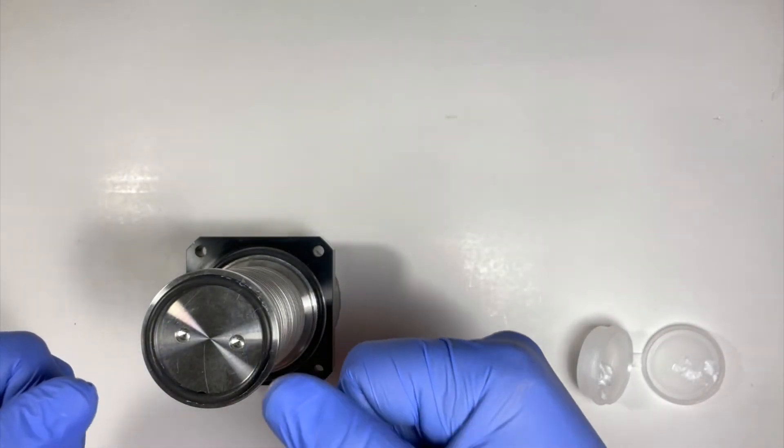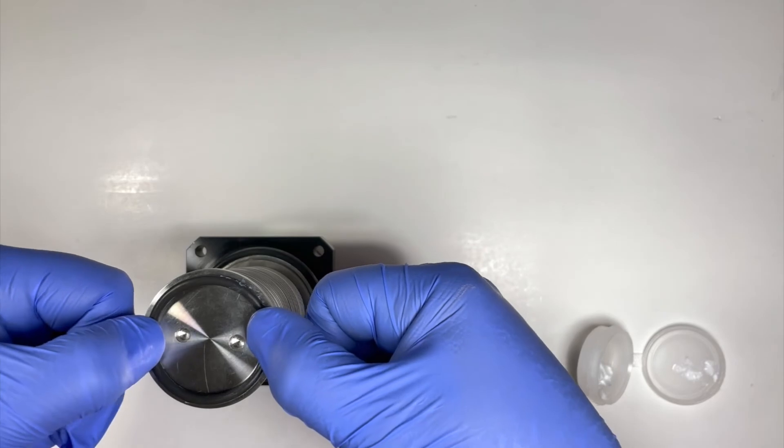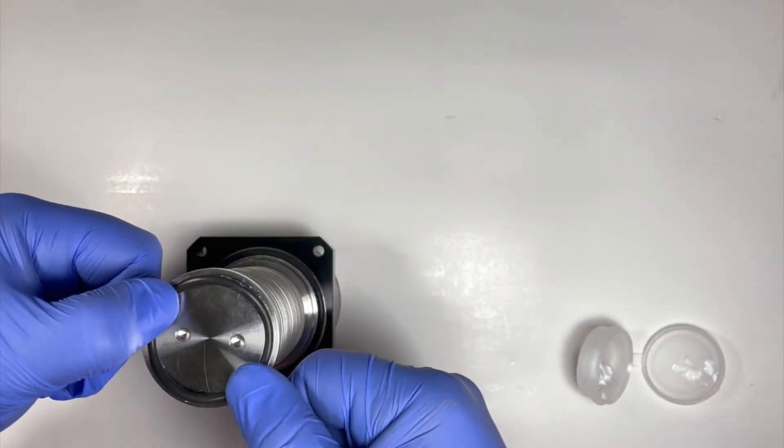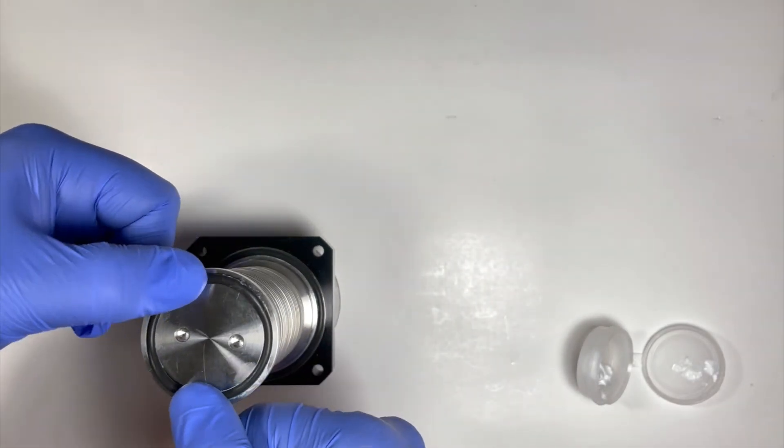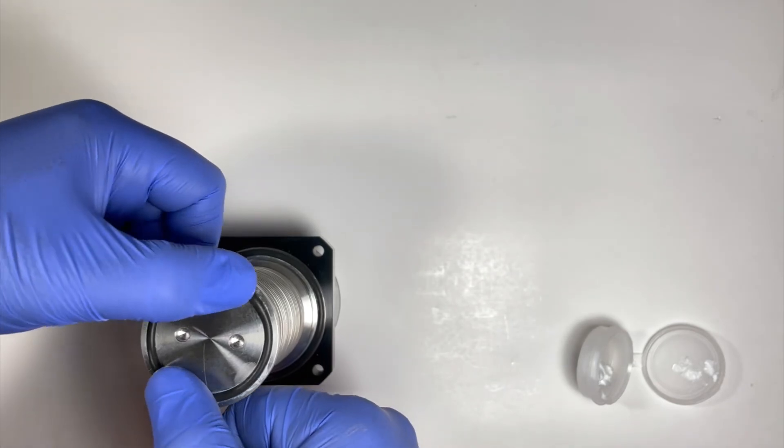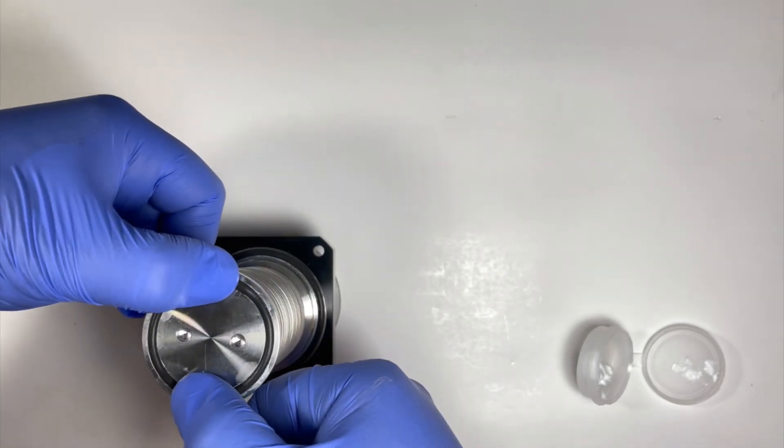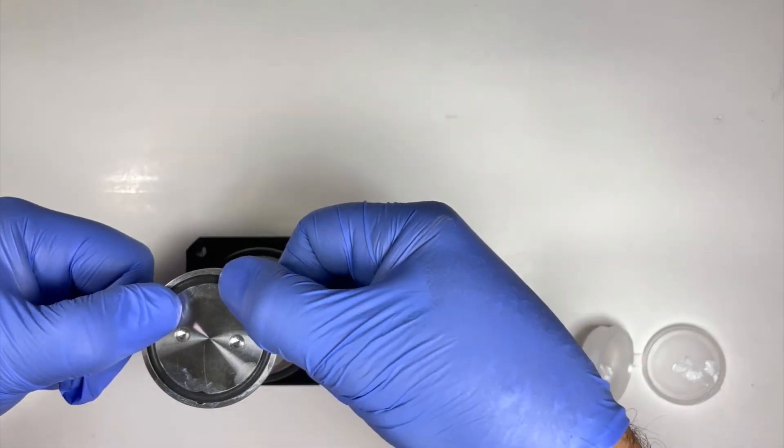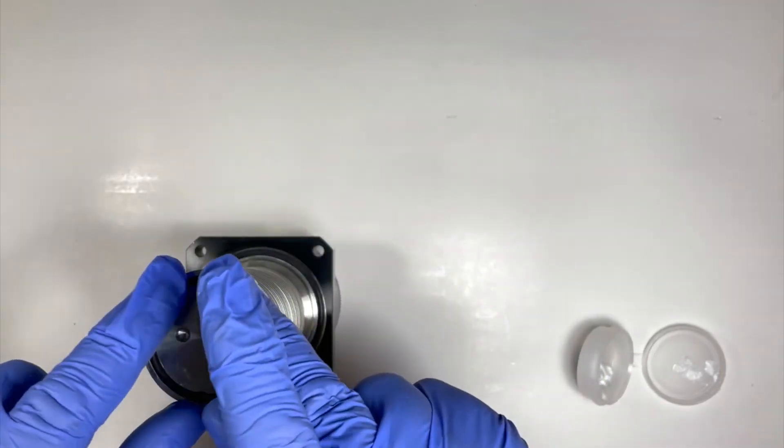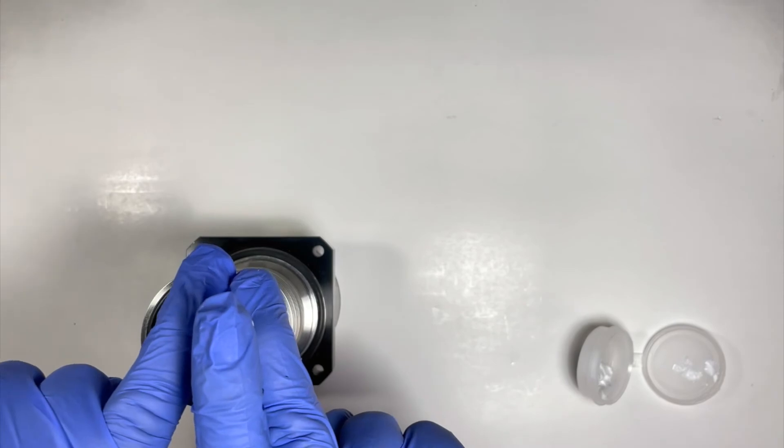With your thumbs at points 180 degrees apart, firmly press the O-ring into the groove. Move your fingers around the internal and press the O-ring again until it is completely installed into the groove.